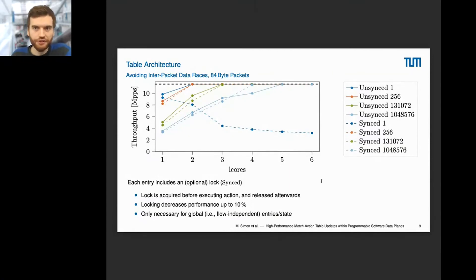To avoid inter-packet data races, we included an optional lock called synced. You can see for having many table entries, the performance scales up with the number of cores and has an overhead of about 10%. If having only one entry, it wouldn't scale because every core accesses the same entry and they lock themselves. The overhead increases for waiting, so there's no more performance gain. But it scales well for having more than one table entry, which is the usual case. This lock is only necessary if you want to access global state. If entries are flow-dependent, the table would be partitioned towards the flows, and because of receive-side scaling, one core would only access one partition, so no lock would be required.